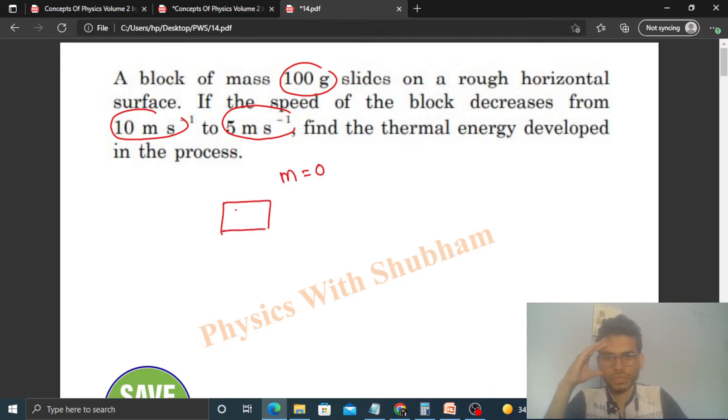So the mass of the block is 0.1 kilogram, and initially it is moving with a speed of 10 meters per second on a rough horizontal surface. After some time its speed becomes 5 meters per second. The initial kinetic energy...